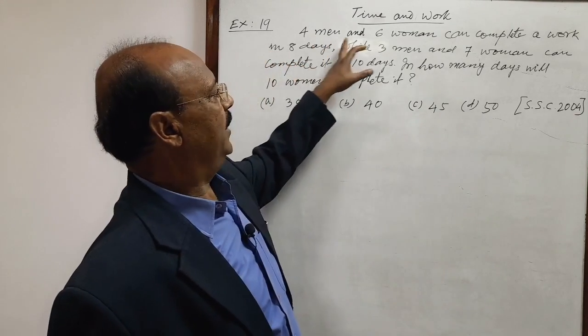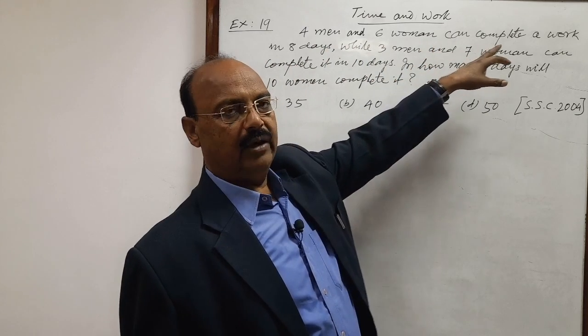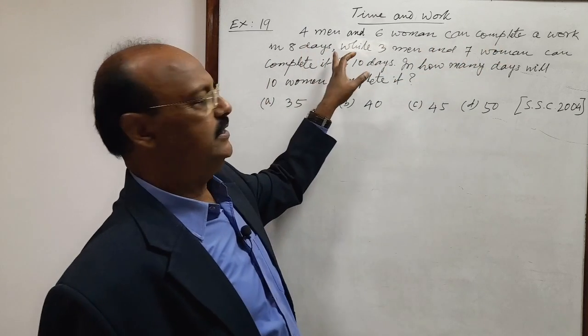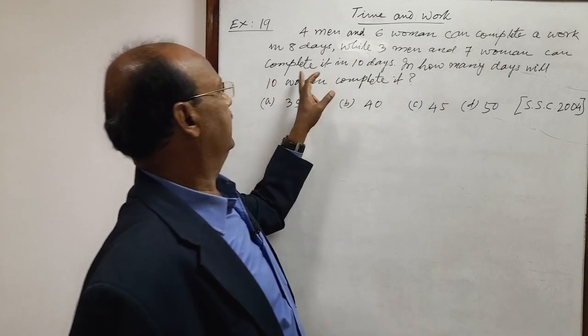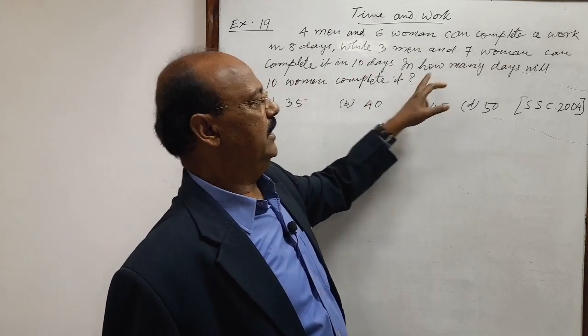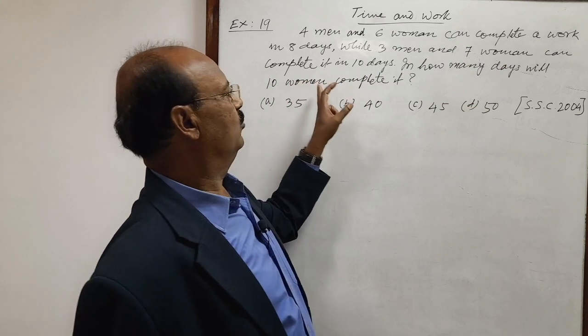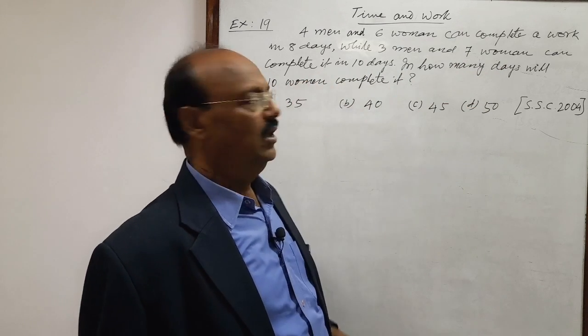Question is: four men and six women can complete a work in eight days while three men and seven women can complete it in ten days. In how many days will ten women complete it?